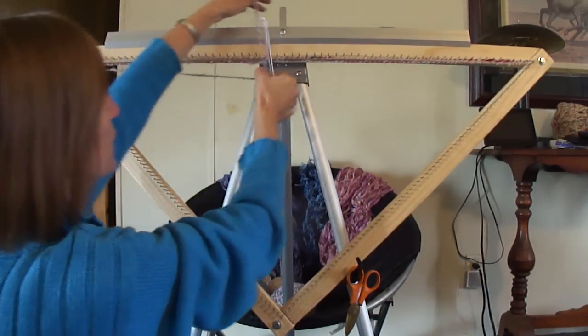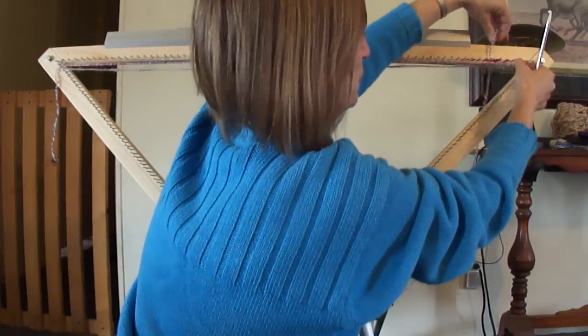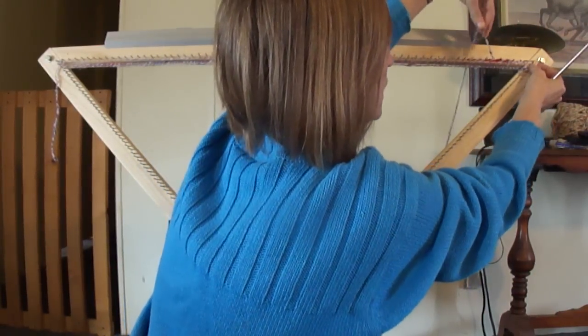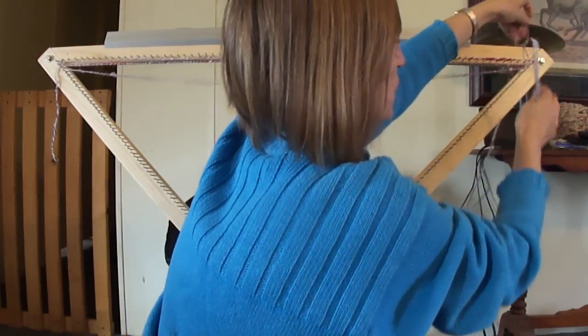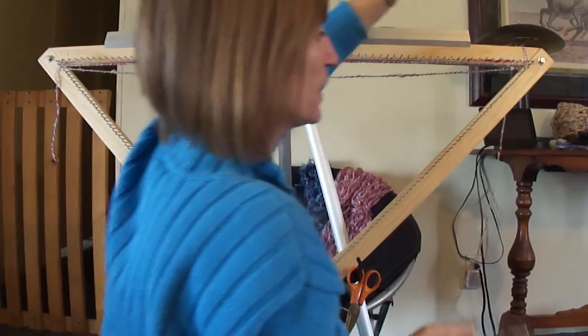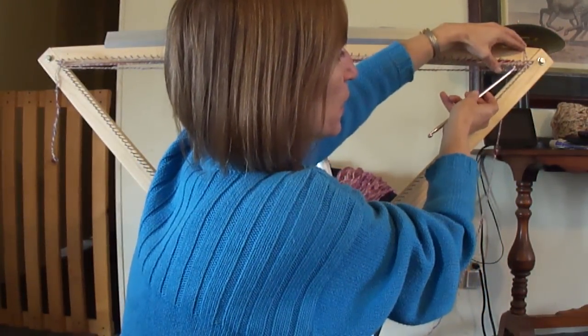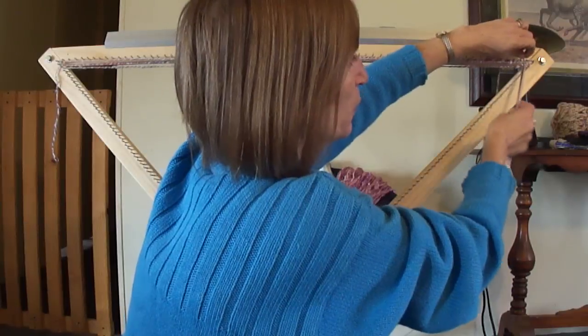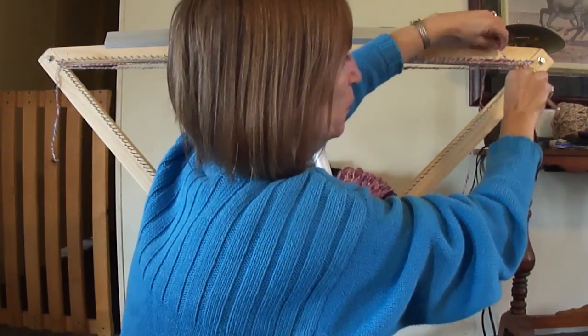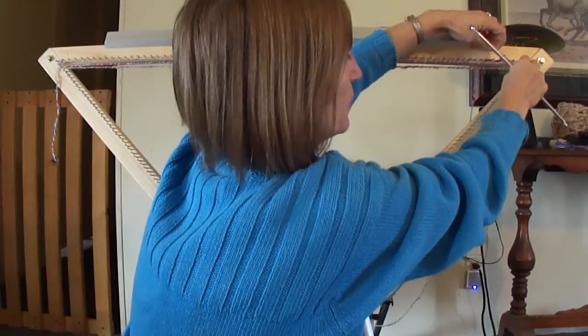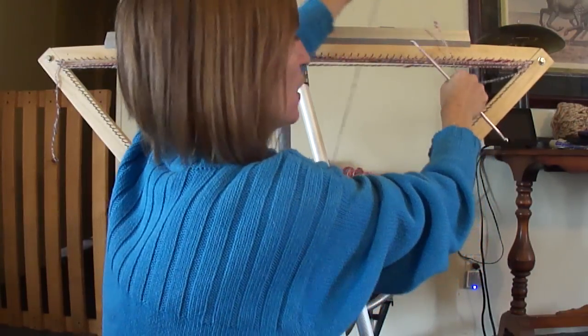And it will be on the third peg down over here. So what you did on one side, you did on the other. Now we have to do the opposite coming back. So I will go under the middle loop, bring it up, put it on the fourth peg down, and run it back across.